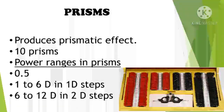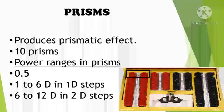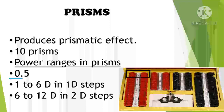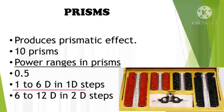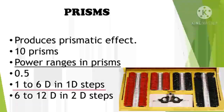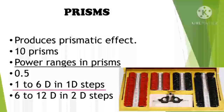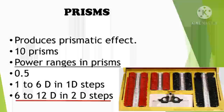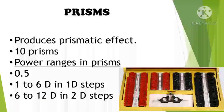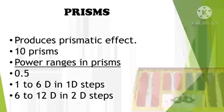In the trial box we have 10 prisms: 0.5 prism diopter, then 1, 2, 3, 4, 5, 6 prism diopters, then 8, 10, and 12 prism diopters — a total of 10 prisms. Prisms are used for squint correction and measurement.